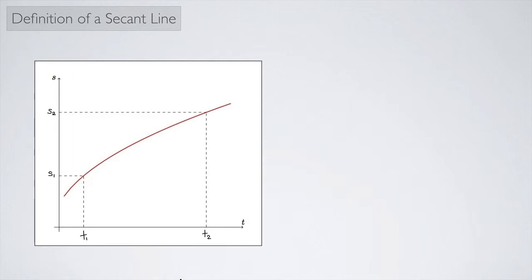And so then I could calculate the average velocity by just looking at the change in position over the change in time. So v-bar is what we use to represent average velocity and that would look like the change in s over the change in t.